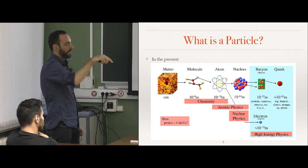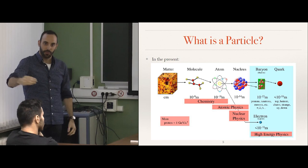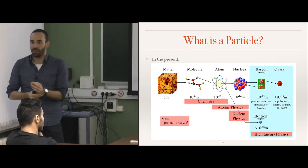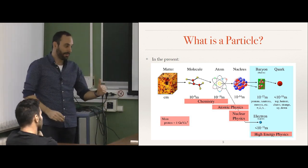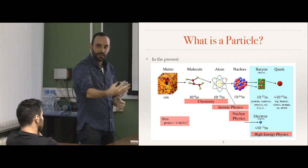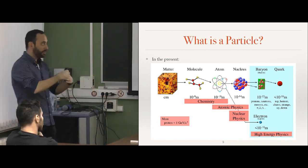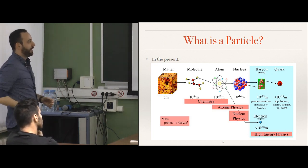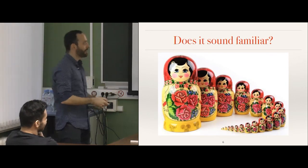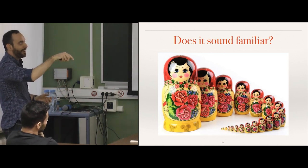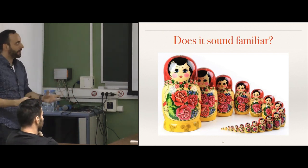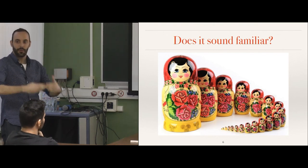Today we know that beyond the atom there is the nucleus and orbiting electrons, and that the nucleus is made of protons and neutrons — but protons and neutrons are not fundamental particles; they are made of quarks. This is where high energy physics starts. As far as we know, with the best of our tools and knowledge, quarks and electrons are the fundamental building blocks of nature. This does not mean that in 20, 50, or 100 years we won't find internal structure inside quarks, but today these are fundamental.